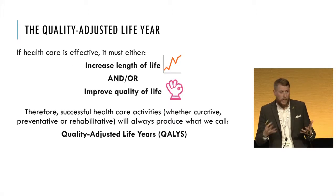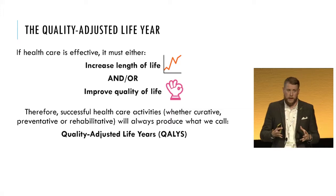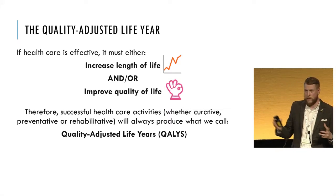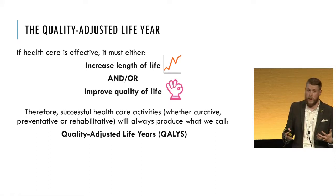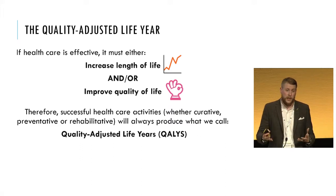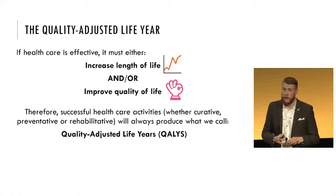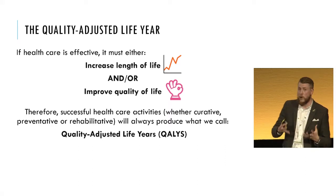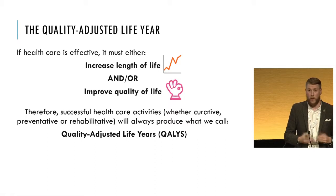Obviously, we can use clinically relevant outcomes to determine cost-effectiveness, but when it comes to looking at a mixture across a range of different treatments and services and making comparisons across disparate services which aren't naturally comparable — for instance, it's very difficult to equate the cost per leg amputation avoided to the cost per cataract removed — we have to use universal approaches to measuring outcomes. This is where the idea of the quality-adjusted life year, or the QALY, came from.